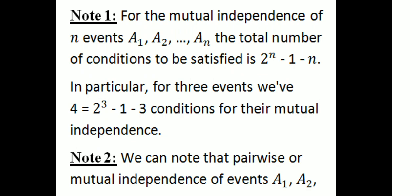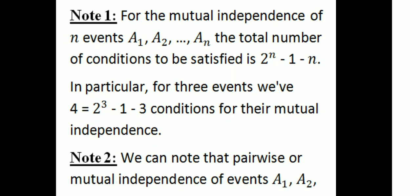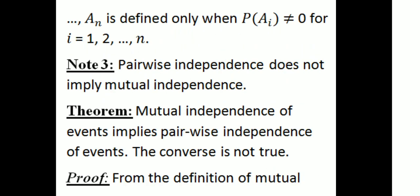Note 2: Pairwise or mutual independence of events A1, A2, ..., An is defined only when probability of Ai is not equal to 0, for i equal to 1, 2, 3, ..., n. Note 3: Pairwise independence does not imply mutual independence.